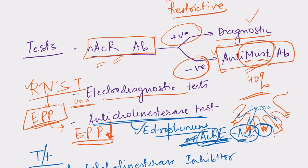We give edrophonium and then observe improvement. For example, the patient is first asked to perform the forward arm abduction test; edrophonium is given, and we see whether the forward arm abduction time improves. If it increases, that means accumulated acetylcholine is causing improvement, which is suggestive of myasthenia gravis.